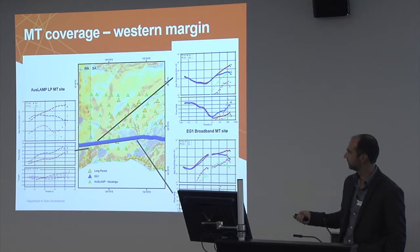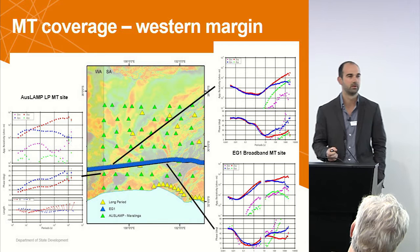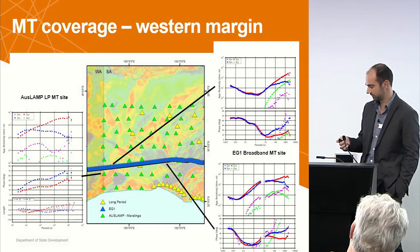One of the datasets is from the OSLEM site, collected right on the border. These go out to periodicities of about 10,000 seconds, which ensures we can image the entire lithosphere and gives us a lot of constraint for the regional context.